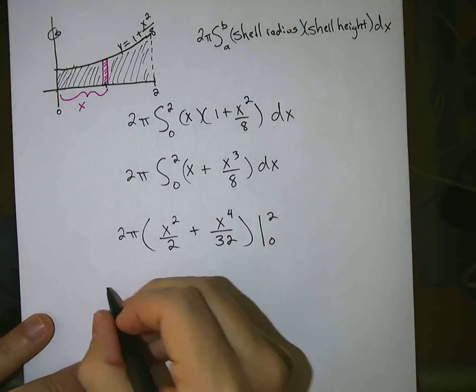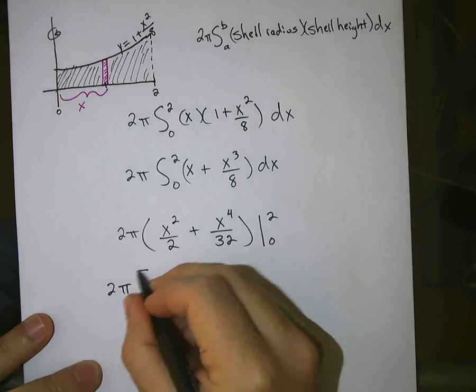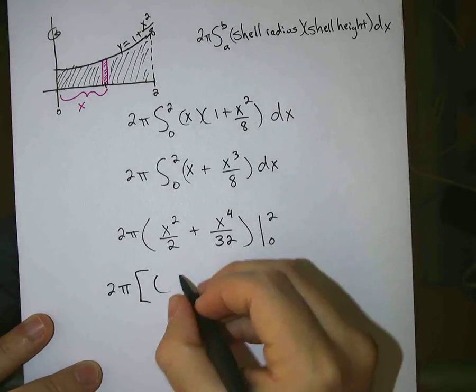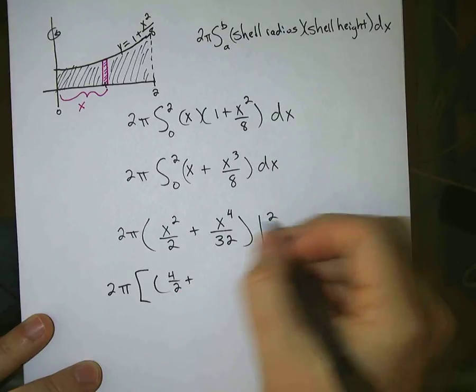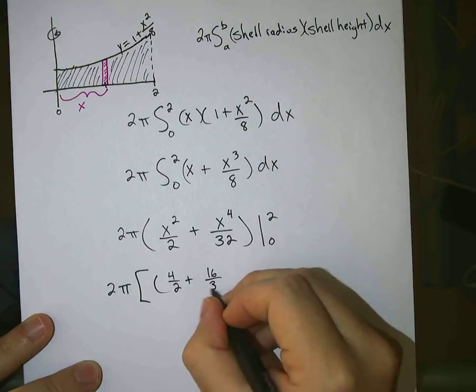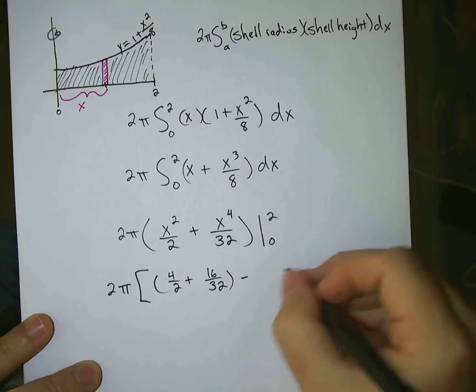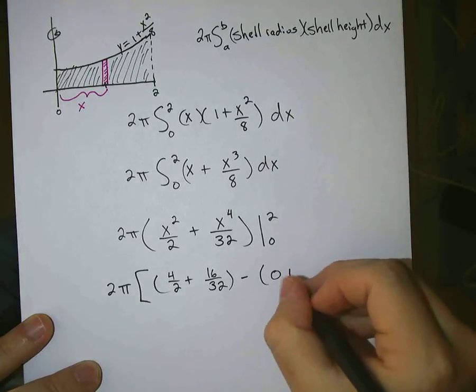Okay, plug in your limits real quick here, keep the 2 pi out front, your limits, first plug in your 2, 2 squared is 4, 4 over 2, plus 16 over 32, and then plug in your lower limit, 0 plus 0.